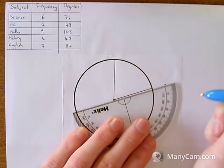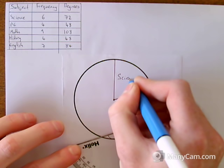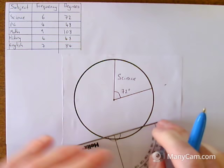I would suggest that as you go along, to label each part so that when you've finished, it's all labeled already for you. So this one was science, and that was 72 degrees.